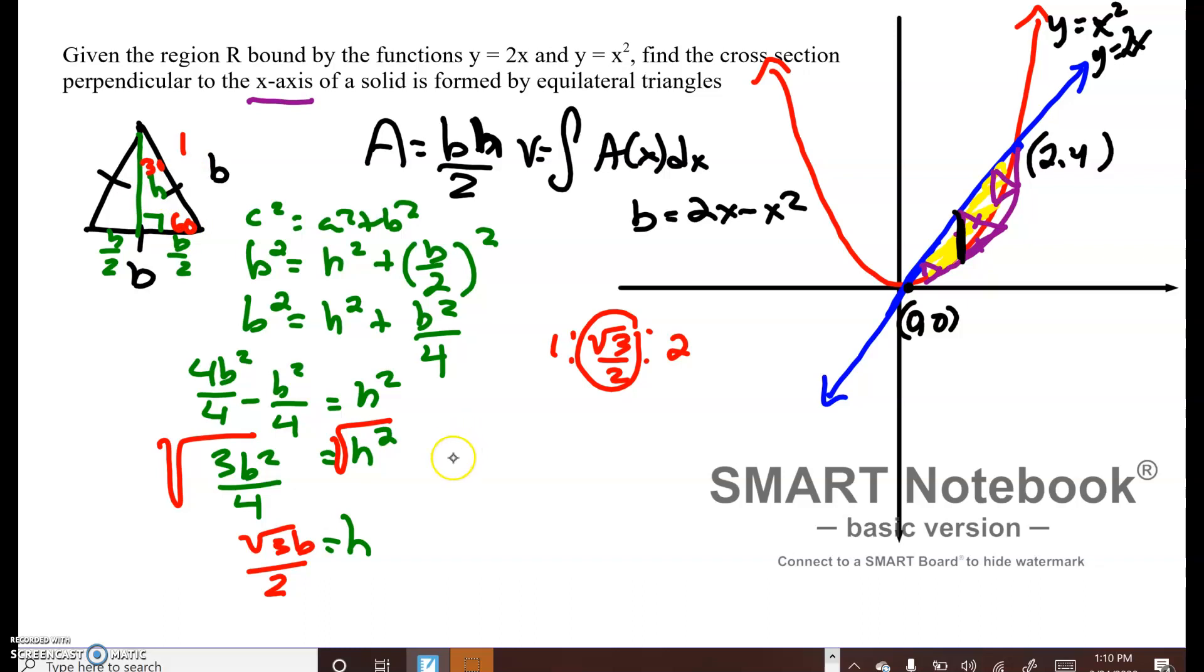Now I can write my area formula. My area formula is b, and I'm going to put 1 half out here because putting it over 2 times confuses people, times my height, which is radical 3 over 2 times b. If I clean up my area formula, I end up with radical 3 over 4b squared.